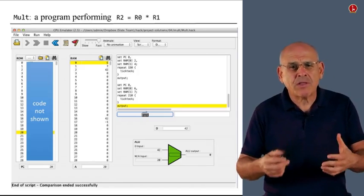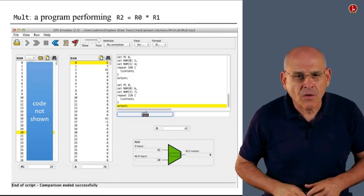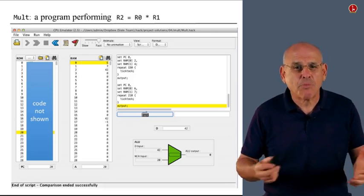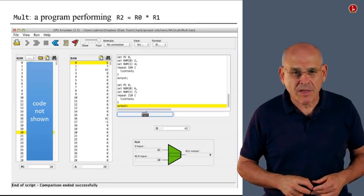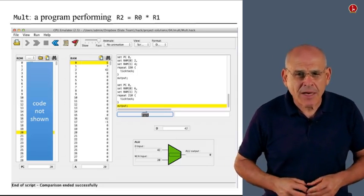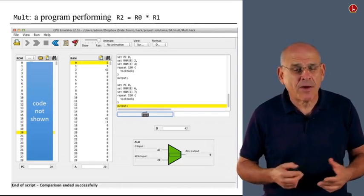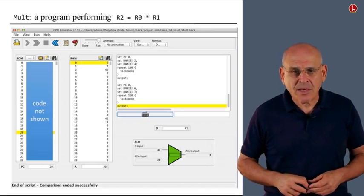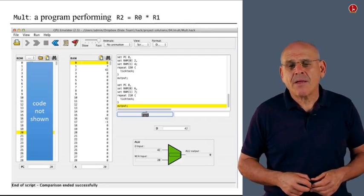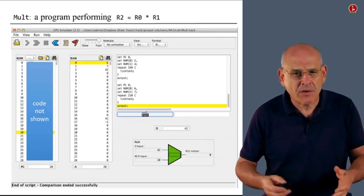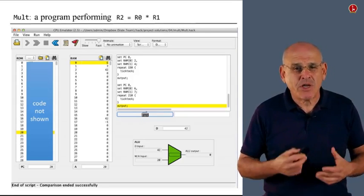The assumption is that once the user has loaded this program into the instruction memory, the user also places two numbers in RAM 0 and RAM 1, clicks the play button, starts praying. And if everything works nicely, the program will compute the product of these two numbers. On the right-hand side in the screen area, we see a script that we supply together with this project. The script is designed to test the program using some pairs of numbers that we made up.